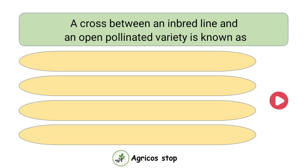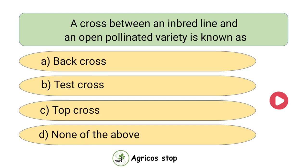A cross between an inbred line and an open pollinated variety is known as? Options are back cross, test cross, top cross, and none of the above. The answer is top cross. A cross between an inbred line and an open pollinated variety is called as top cross.